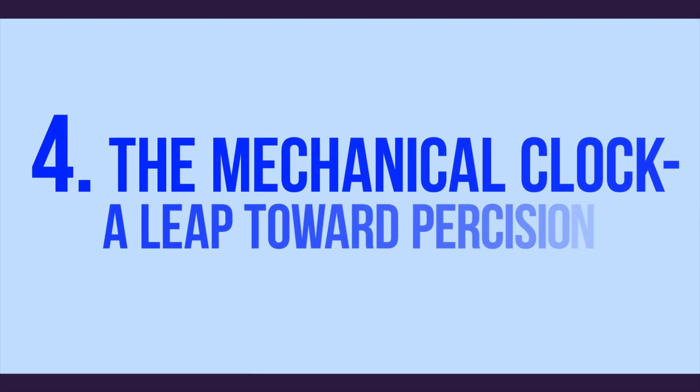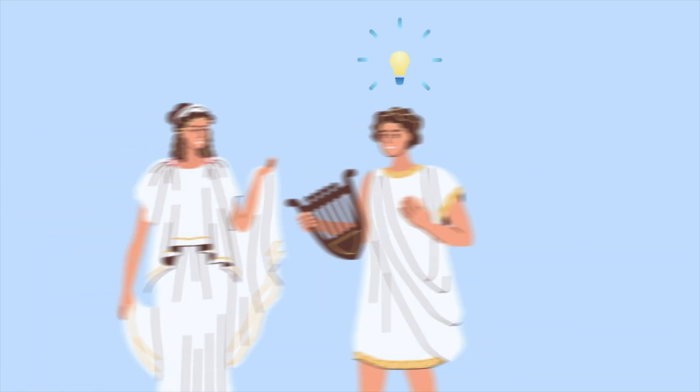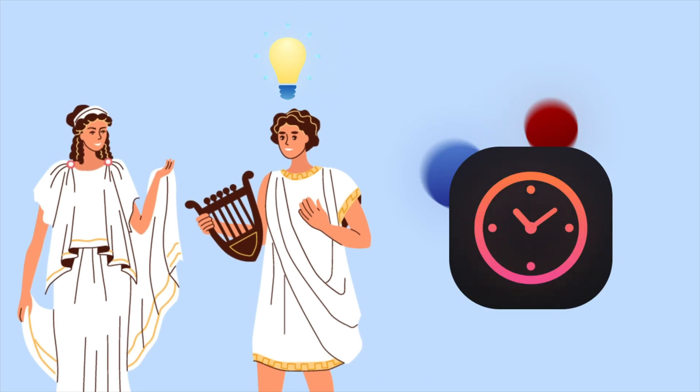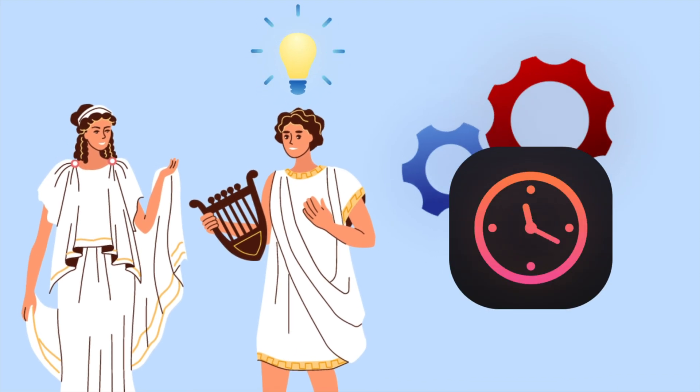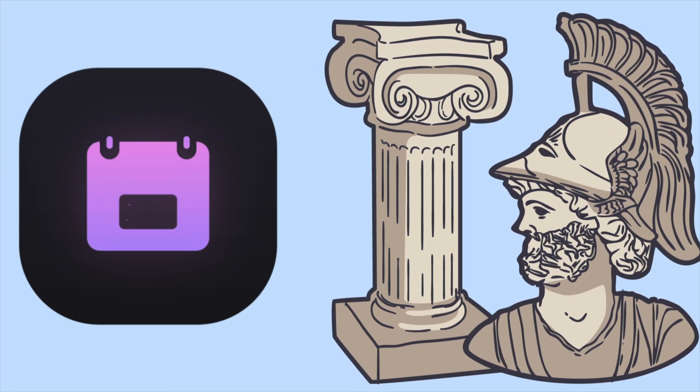The Mechanical Clock. Over time, new technological advancements arose in Greece, where the Greeks invented mechanical clocks that utilized gears and weights to control the clock's movement. However, the radical shift in humanity's understanding of time came with the Romans, who introduced the idea of the calendar.